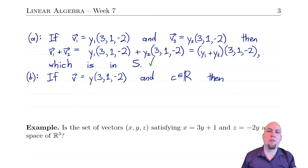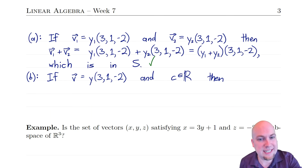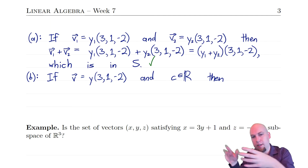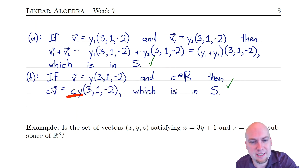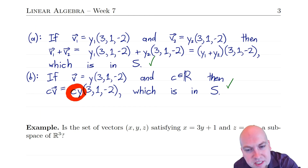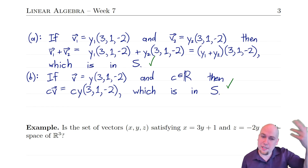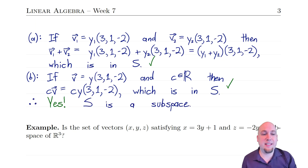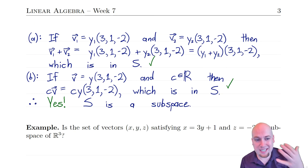Now property B: pick a vector y·(3, 1, −2) in S and a scalar c. Then c times v = c·y·(3, 1, −2), which is still a scalar times (3, 1, −2), so it's still in S. Both properties A and B hold, so yes, this set S is a subspace — the set of all vectors satisfying x = 3y and z = −2y is a subspace.